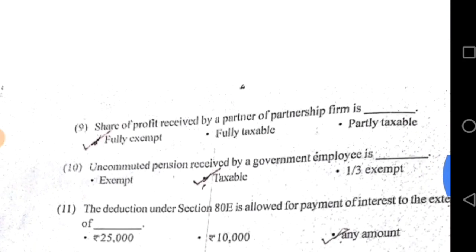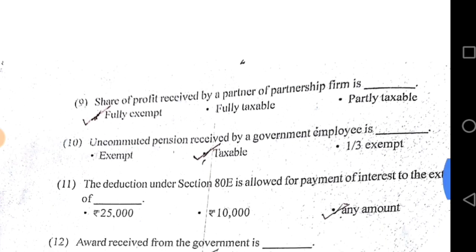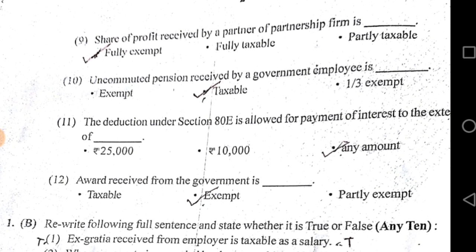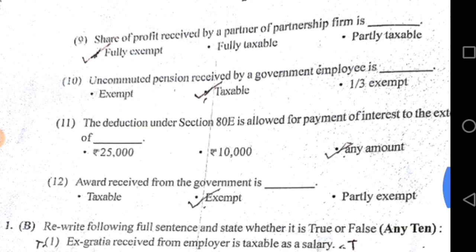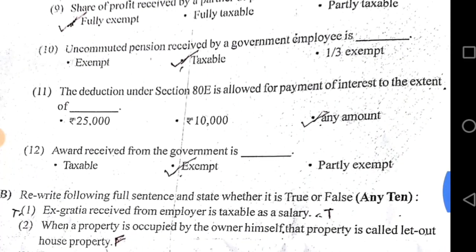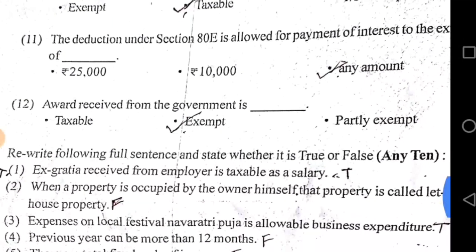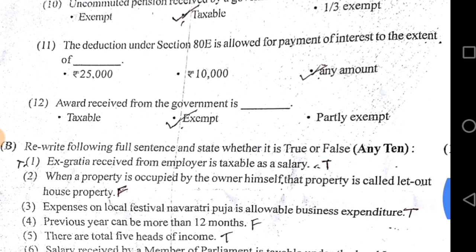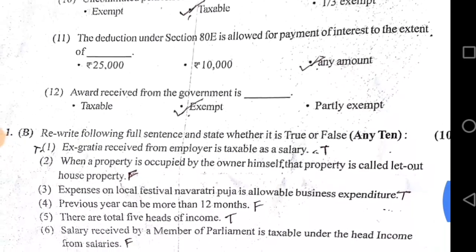Share of profit received by a partner of a partnership firm is fully exempt. Exemption for partnership firm is under Section 10(2A). Uncommuted pension received by a government employee is taxable — uncommuted pension is taxable for both government and private employees. Deduction under Section 80E is allowed for payment of interest to any extent — there is no limit — for interest on loan taken for higher education. Award received from the government is exempt. Those were the 12 multiple choice questions.